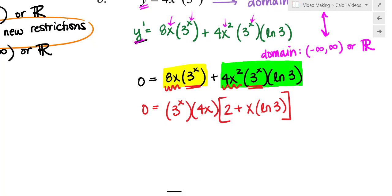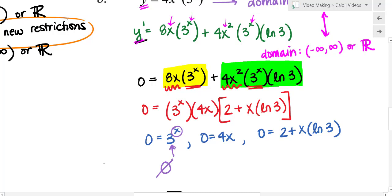All right, so I'll use my zero product property to rewrite this and try to solve here. So 0 equals 3 to the x. 0 equals my second factor of 4x. Or 0 equals 2 plus x times natural log of 3. 3 to the x, where is that 0? Well, again, this is an exponential function. So if x is positive, you're going to be repeatedly multiplying by 3. If x is 0, 3 to the 0 is 1. And if x is negative, that just means you're repeatedly dividing by 3. You are never, ever, ever going to get 0. You could prove it if you wanted to by taking the natural log of both sides. The x comes down in front. But we cannot do the natural log of 0 for that exact reason. So that part has no solutions.